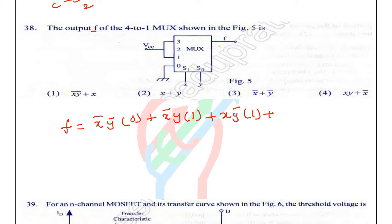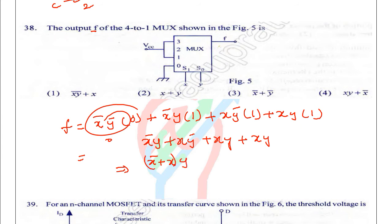From this, the first term is zero. So we can write X bar Y plus X Y bar plus XY. Additionally we will take XY again here. By simplifying this, we can write X bar Y plus X Y bar plus XY.